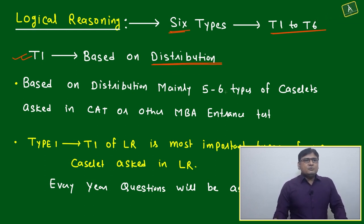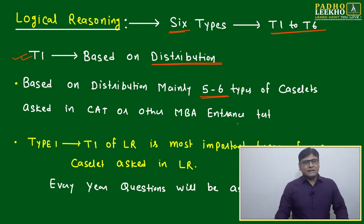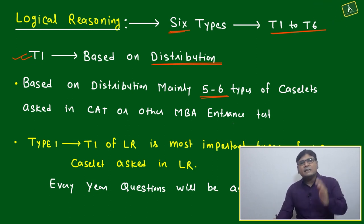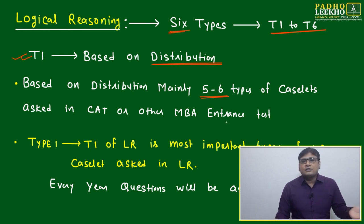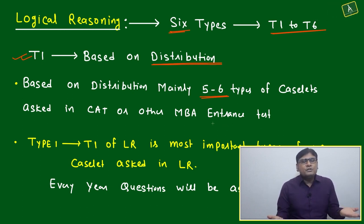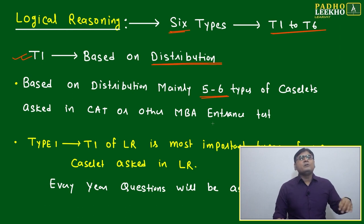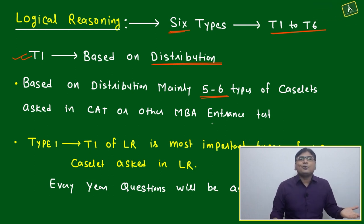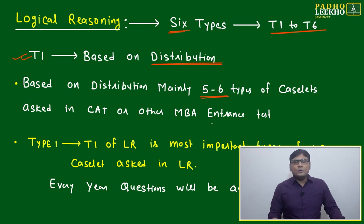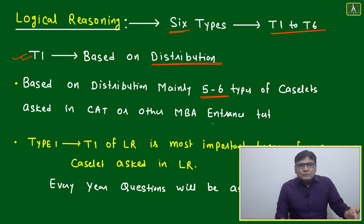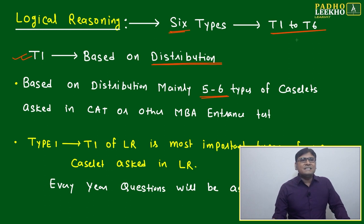Based on distribution, mainly five to six types of case sets are asked — all mathematical concepts. Logical reasoning is broken down into six types. If you break down any section at this fundamental level, you will not miss any concept or fail to attempt any type of case set. Breaking down at the lowest level ensures everything is included, covering hundred percent of LR case sets.